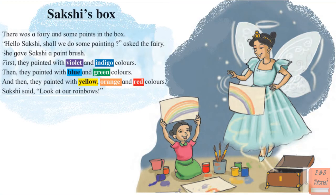Sakshi found a big box. She opened it. There was a fairy and some paints in the box. The fairy said, 'Hello Sakshi, shall we do some painting?' She gave Sakshi a paintbrush. First, they painted with violet and indigo colors. Then, they painted with blue and green colors. And then, they painted with yellow, orange, and red colors.